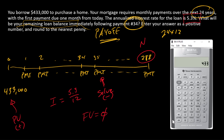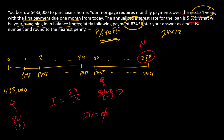Starting with $433,000 as PV, 0 as FV, 5.3 divided by 12 as I, and 288 as N — I can solve for the payment: compute payment. The payment is $2,660.37. That is step number one.